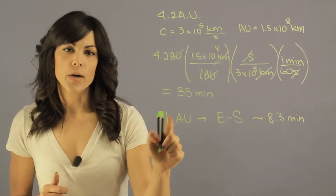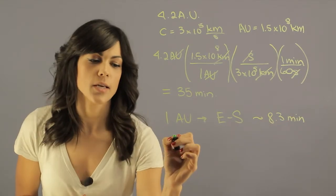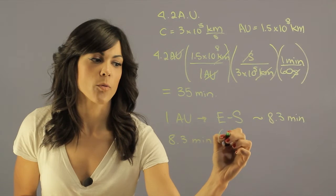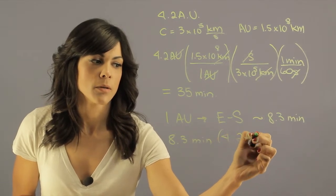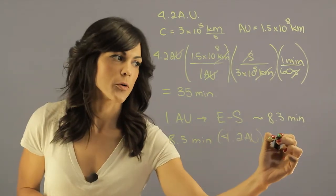So if every one astronomical unit light takes 8.3 minutes, if we take 8.3 minutes and multiply it by 4.2 astronomical units, we're going to end up getting the actual answer which is about 35 as well.